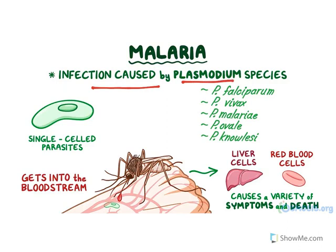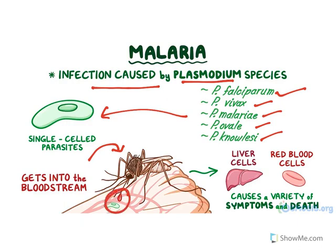Malaria is an infection caused by Plasmodium species like Plasmodium falciparum, vivax, malariae, ovale, and knowlesi. This Plasmodium is a single-cell parasite carried by Anopheles mosquitoes and transferred by mosquito bite. The parasite gets into the liver cells, develops, and then attacks our red blood cells, causing a variety of symptoms and potentially death.